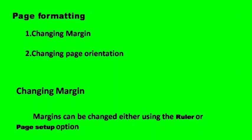The next one is page formatting, the last type of formatting. In page formatting there are two types: one is changing the margin of the document and the second one is changing the page orientation. The first one is changing the margin. Margins can be changed either using the ruler or the page setup option.